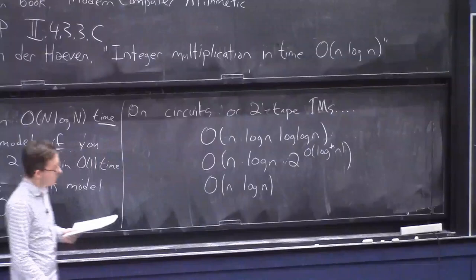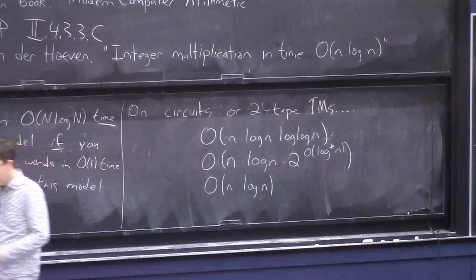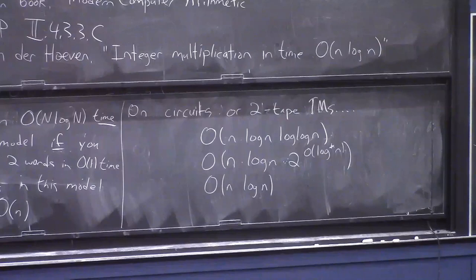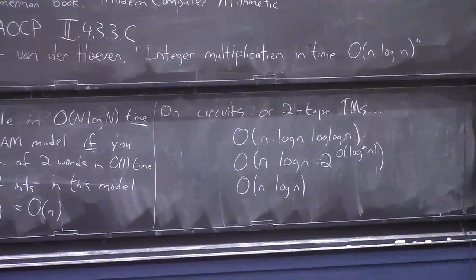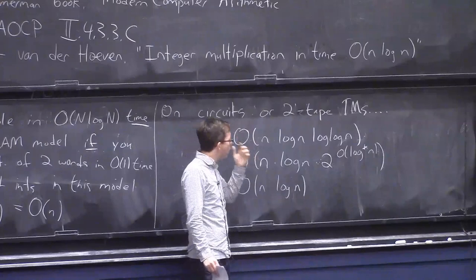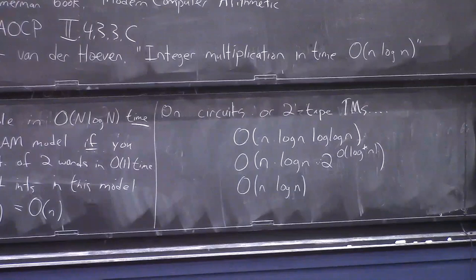OK, so before we get into it, and I will get into how to do it soon, you might ask why obsess so much about integer multiplication. It's just one problem. One reason is that the best known running time for pretty much every arithmetic problem is like a direct function of the time for multiplication. Almost every arithmetic problem, somehow the best algorithms just reduce to multiplication. And so back in these days when they weren't really sure what should be the best running time for integer multiplication, they would just call it something like m of n and say here's my running time for division or exponentiation or whatever.